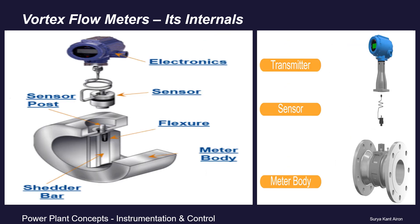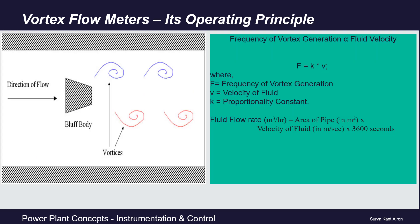It could also be an insertion type, similar to a thermowell. Looking at its internals, the major parts are: the obstruction plate — that is the vortex shedder — and the sensor, that is the vortex detector, and the third main part is the electronics, that is the transmitter.